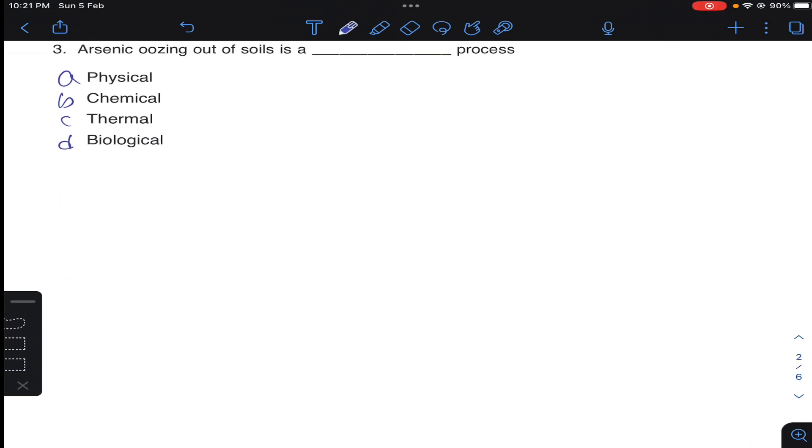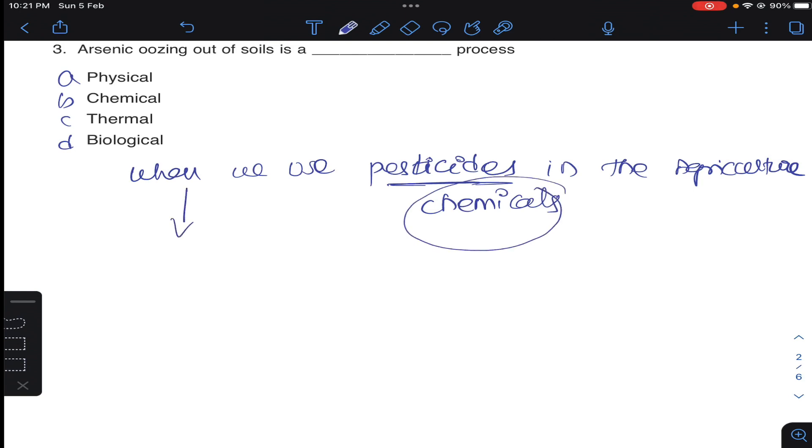Question number three: arsenic aging out of soils is a blank process. So when we use pesticides in agriculture, generally pesticides are chemicals, so arsenic will be added to the soil.